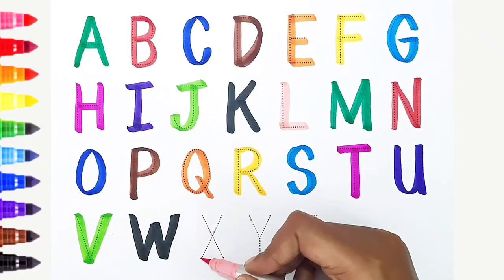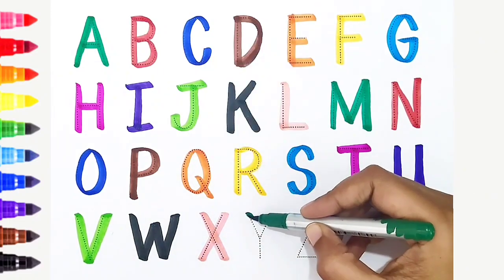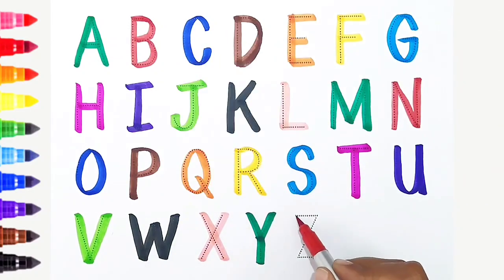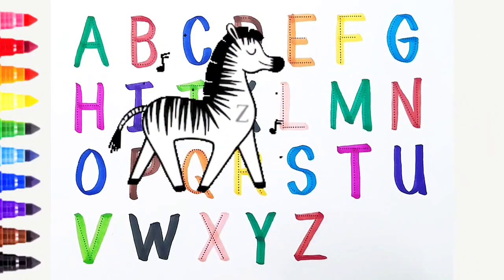X, light pink color. X is for x-ray. Y, dark green color. Y is for yak. Z, red color. Z is for zebra. Once again!